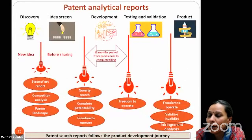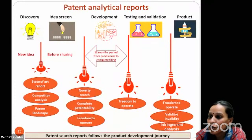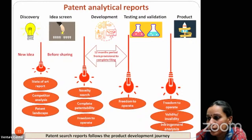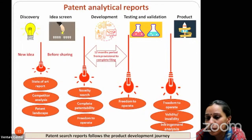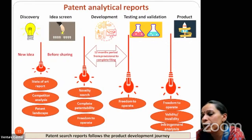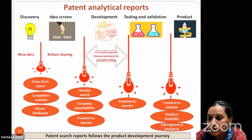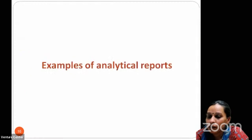These reports can be used at different stages of invention or company development. If one has a new idea and wants to file a patent, a state-of-art or novelty search report is appropriate. If a company is launching a product in a different country, a Freedom to Operate report is needed. If a company wants to invest in new technology or understand portfolio trends, a patent landscape report is most suitable. Understanding which report is applicable at each moment is key.